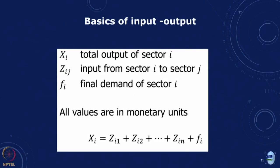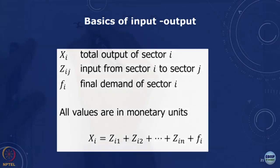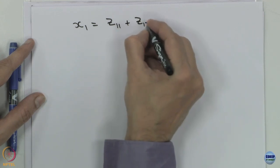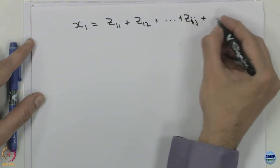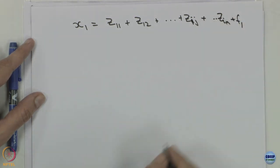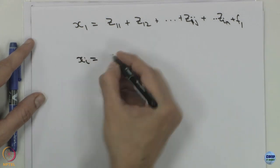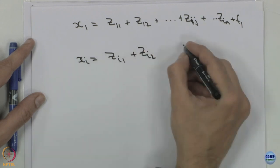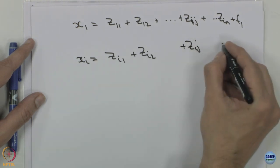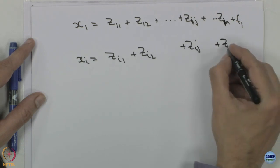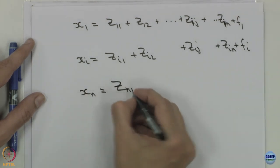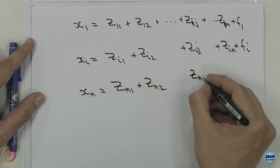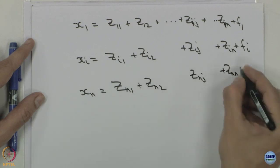Let us derive and move forward with this. We are looking at x1 as z11, z12 plus z1j, z1n plus f1. Then for the ith row, this will be zi1, zi2, zij, zin plus fi. And xn would be zn1, zn2, znj, znn plus fn.